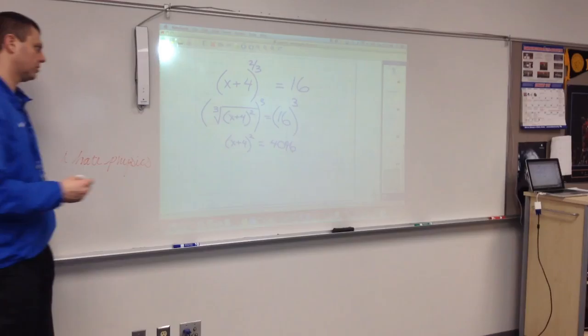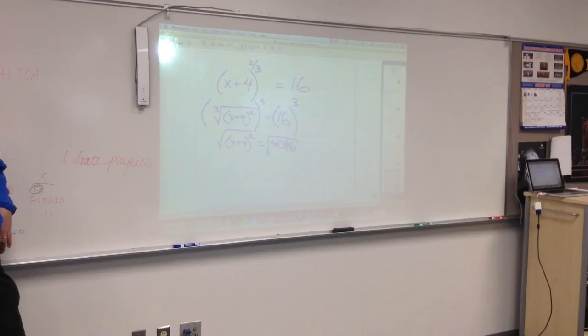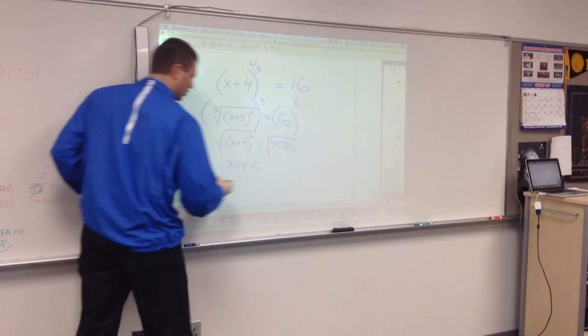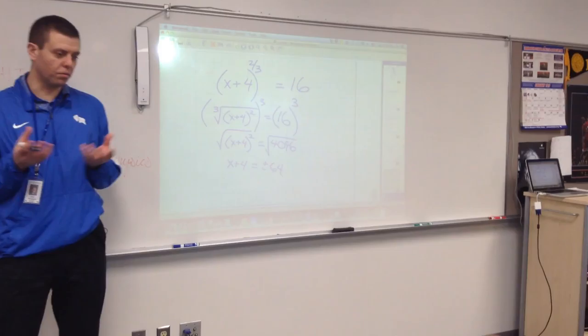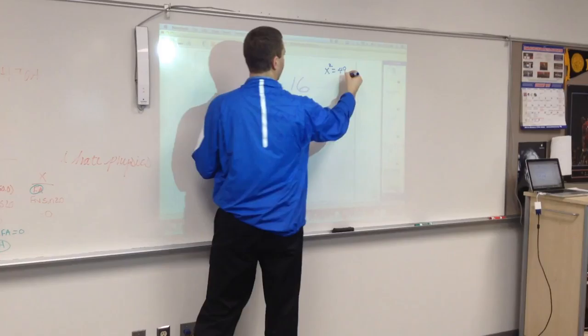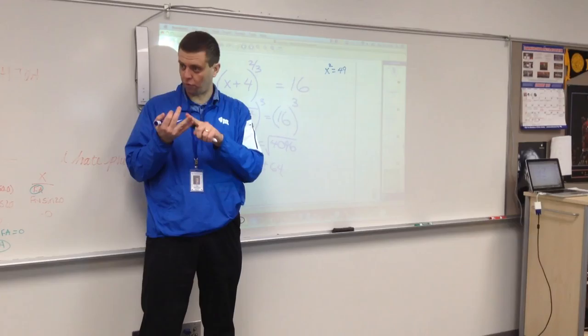Square root both sides. So x plus 4 equals, now don't forget this part, plus or minus. Because you took the square root of both sides of an equal sign in an equation. It could be a positive or it could be a negative. If I have x squared equals 49, there's two answers there, right? 7 or negative 7. So whenever you square root both sides, whenever you even root, so square root, 4th root, 6th root, 8th root, whenever you even root both sides of an equal sign, be sure to put plus or minus.